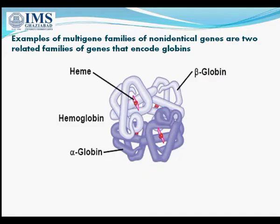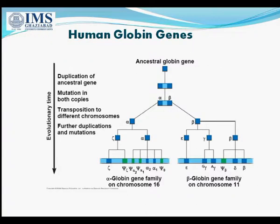This is the diagram of hemoglobin — it contains alpha globin protein as well as beta globin protein. This is a diagram showing the different human globin genes.